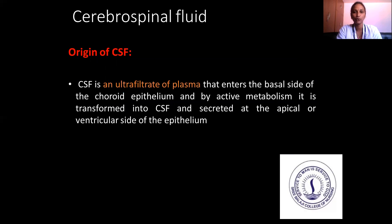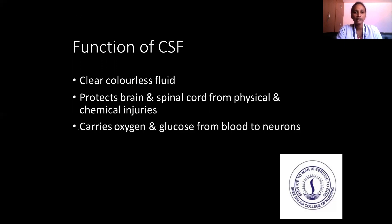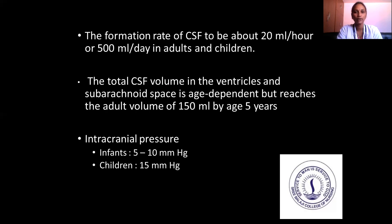Going on to cerebrospinal fluid. CSF is an ultrafiltrate of plasma that enters the basal side of the choroid epithelium. By active metabolism, it is transformed into CSF and secreted at the apical side of the epithelium. CSF is a colorless fluid that protects the brain and spinal cord from physical and chemical injury and carries oxygen and glucose to the neurons. The formation rate is about 20 ml per hour or 500 ml per day. The total CSF volume reaches the adult volume of 150 ml by age 5 years.